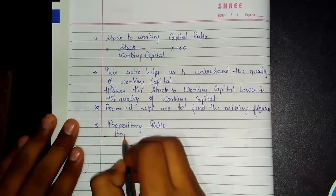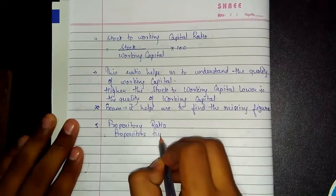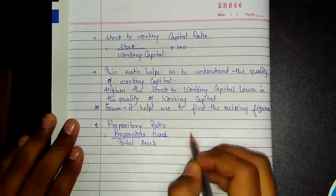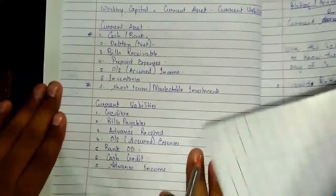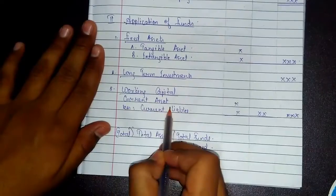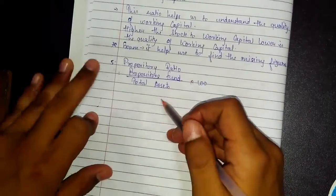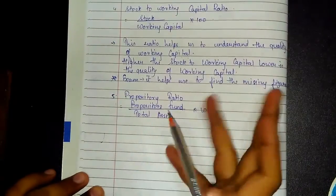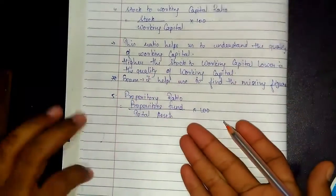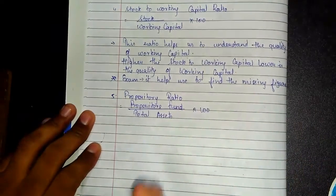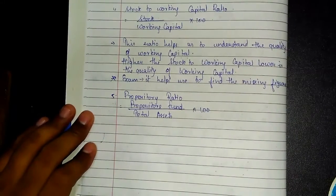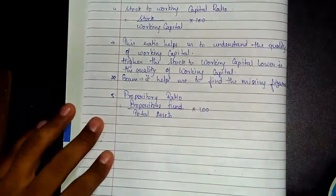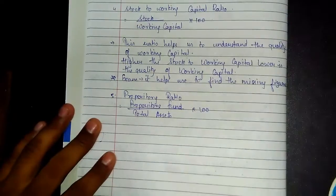The Proprietary Ratio equals Proprietor's Fund divided by Total Assets. Many students misinterpret 'Total Assets.' Total Assets here means Fixed Assets, Long-term Investments, and Current Assets — it does not include certain other items. In the practice manual, this is not clearly specified, which causes confusion. Students sometimes conclude the practice manual is wrong and apply their own formula, which is where many go wrong in the exam.